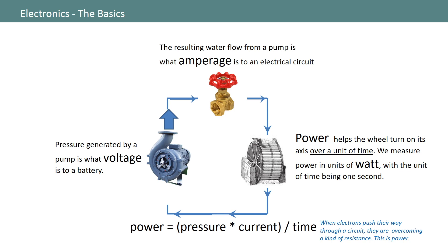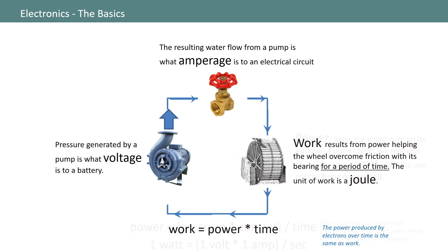Power results from the work done by your circuit over a unit of time, or one second. In electrical circuits, power results from multiplying voltage times current over time, which is the same as volts times amps per second. In other words, one volt pushing one amp through your circuit over the course of one second is equal to one watt. Work results from power helping the waterwheel overcome friction through time, so it's essentially the same as power multiplied by time.